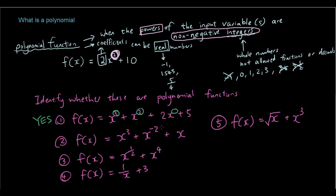Now, if you look at question two, what's happening is we have a number here that is a negative power. And notice how it says we want non-negative integers for polynomial functions. So this is not a polynomial.